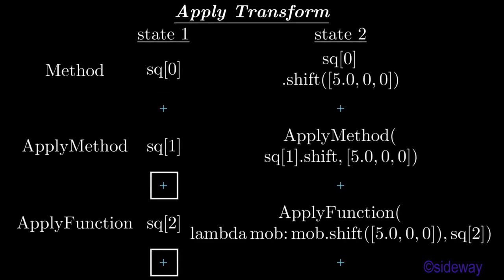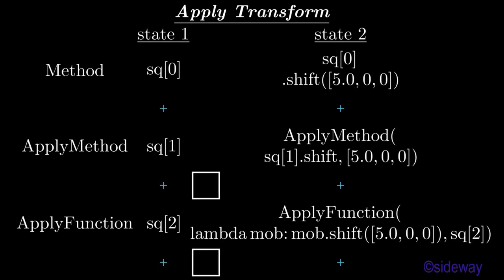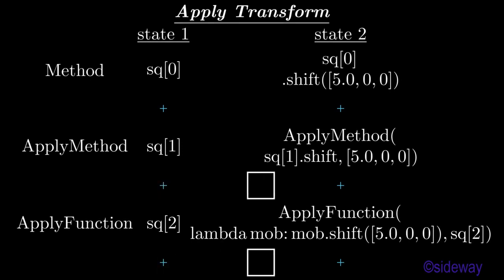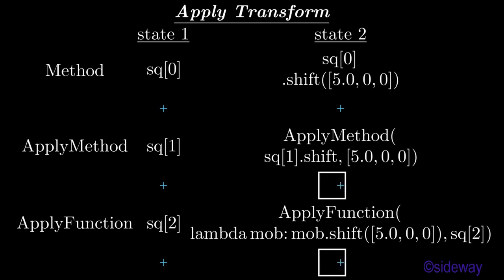In general, apply transform methods are used to animate the applied method of a mathematical object through the apply method, or to animate the function applied to a mathematical object through apply function.